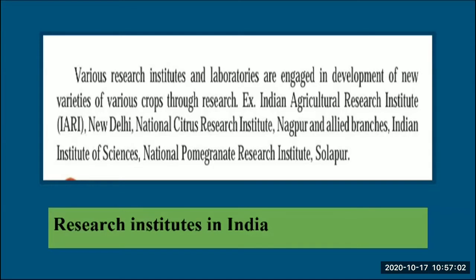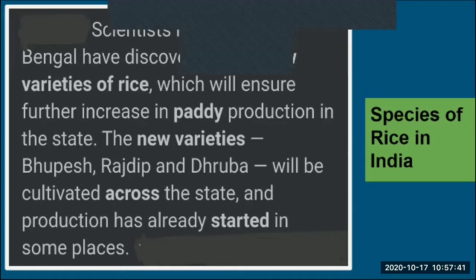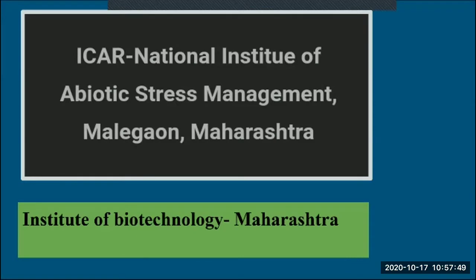Various research institutes in India are engaged in developing new crop varieties, for example: the Indian Agricultural Research Institute (IARI) at New Delhi, the National Citrus Research Institute at Nagpur, the Indian Institute of Science, and the National Pomegranate Research Institute at Solapur. Scientists in West Bengal discovered three new rice varieties — Bupesh, Rajdeep, and Druba — to increase paddy production. At the state level, Maharashtra has ICAR's National Institute of Abiotic Stress Management at Malegaon.